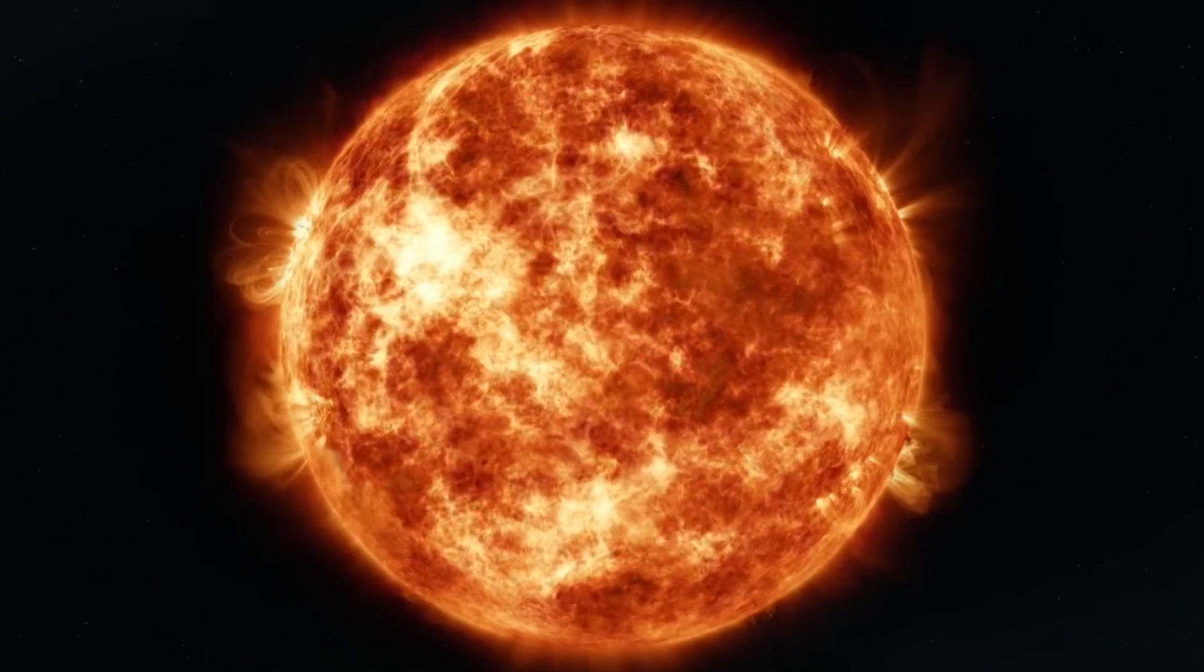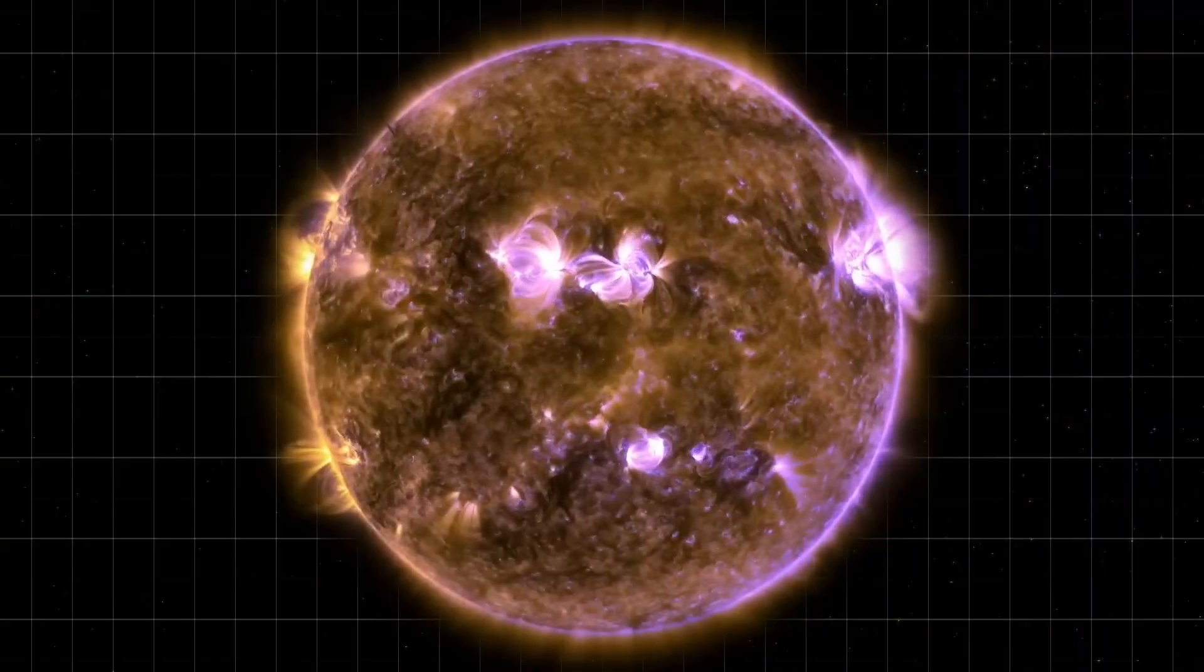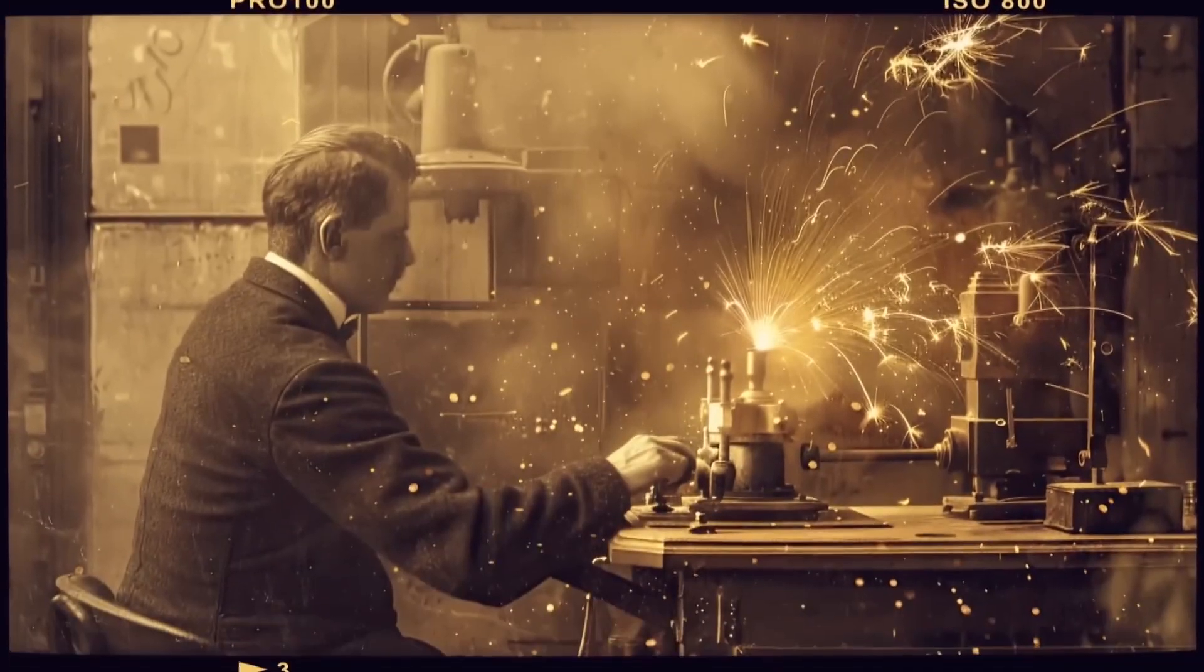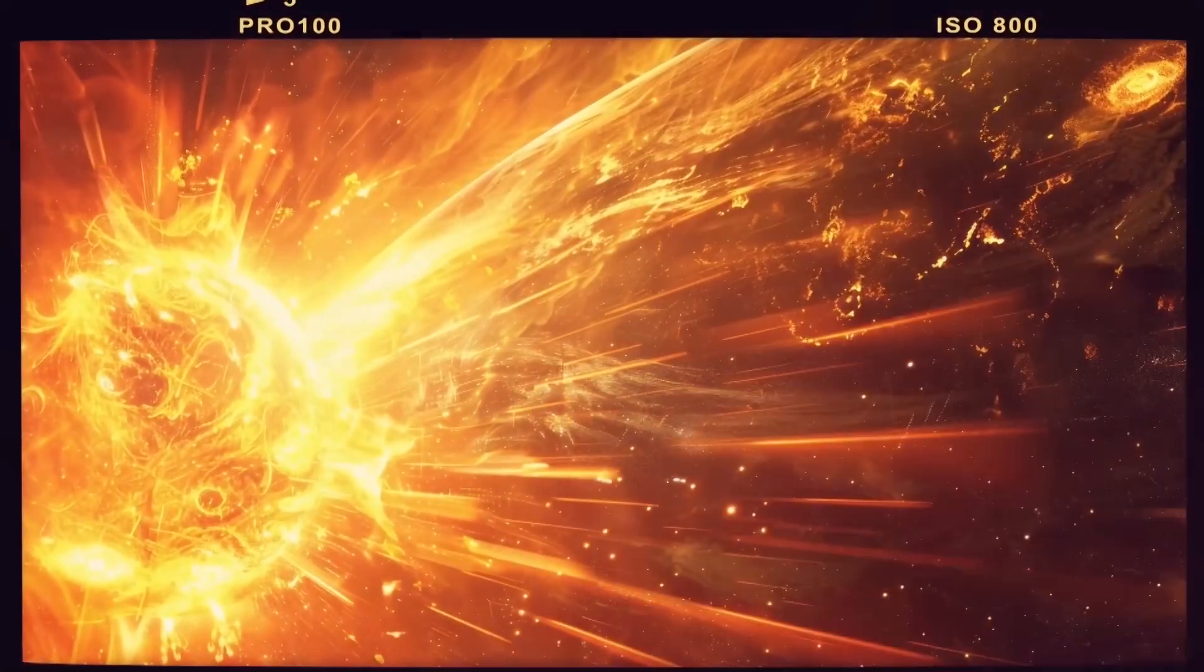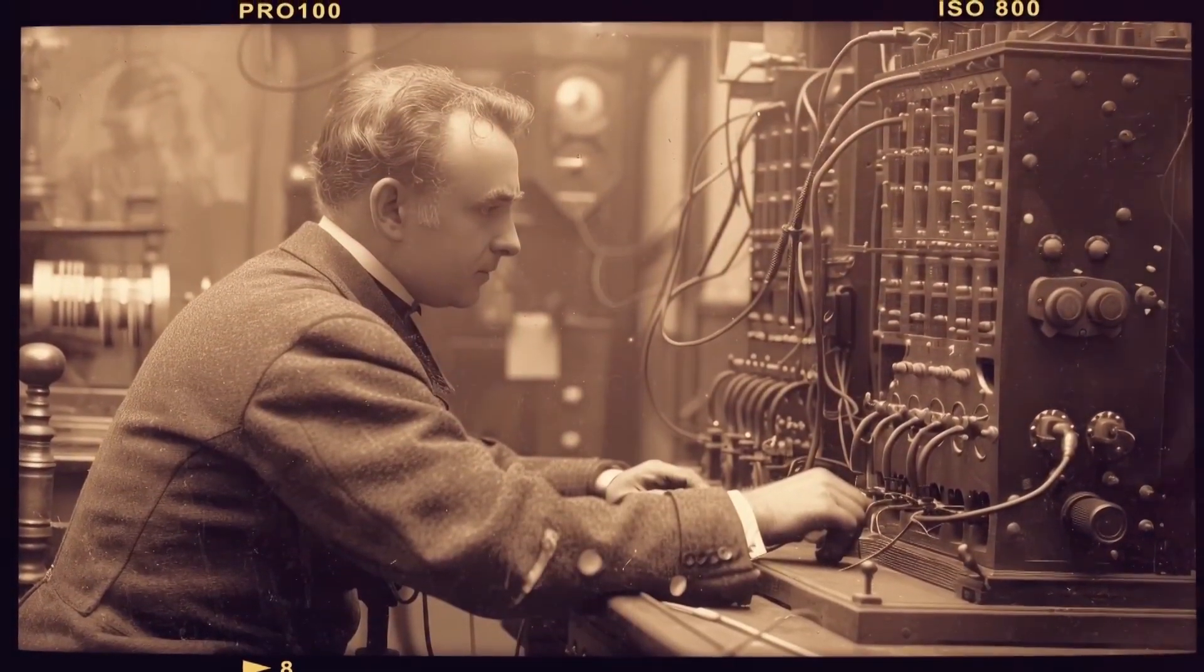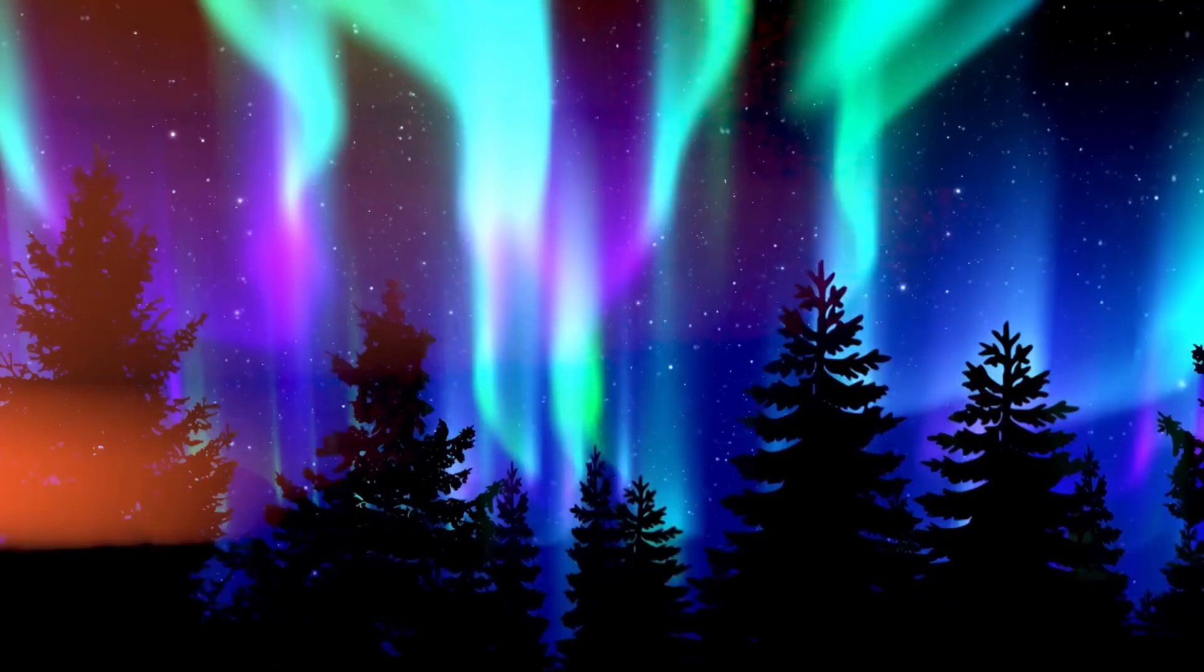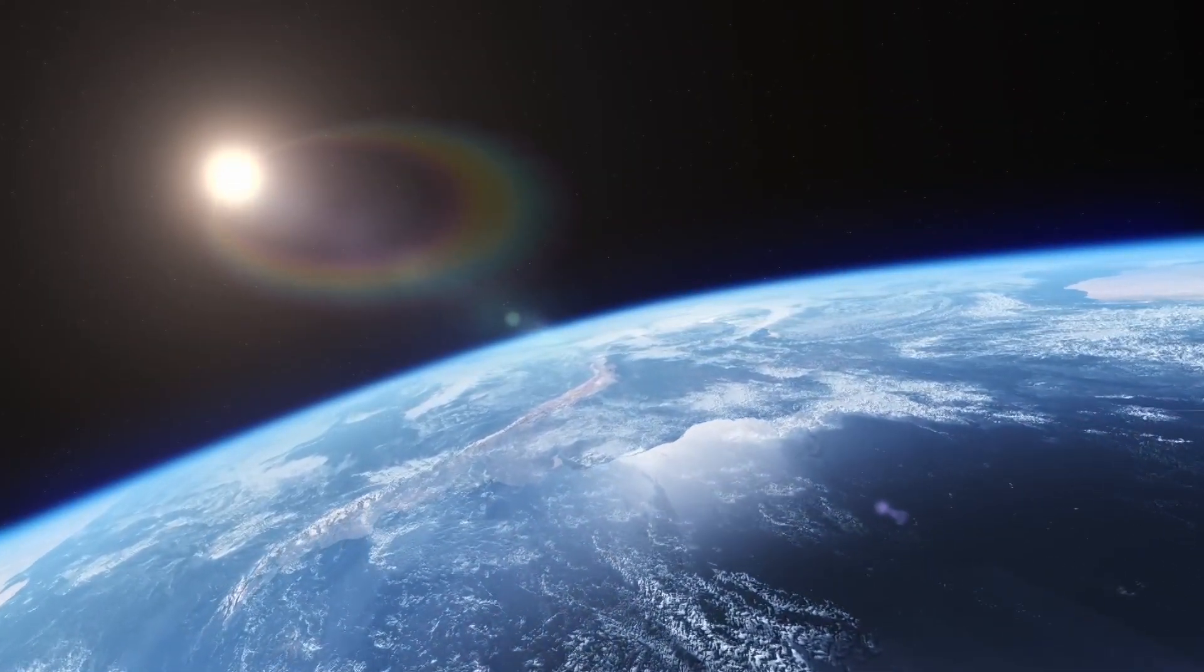The sun's magnetic pole flips are a reminder of the incredible forces at play in our universe. They're a natural part of the solar cycle, influencing everything from space weather to the technology we rely on every day. As we enter the next phase of the solar cycle, it's important to understand these magnetic shifts and prepare for their potential impact. Whether it's stunning auroras or powerful solar storms, the sun's activity shapes our world in ways that are both beautiful and dangerous. So, the next time you see the sky light up with the northern lights, remember, you're witnessing the effects of a cosmic dance happening 93 million miles away.